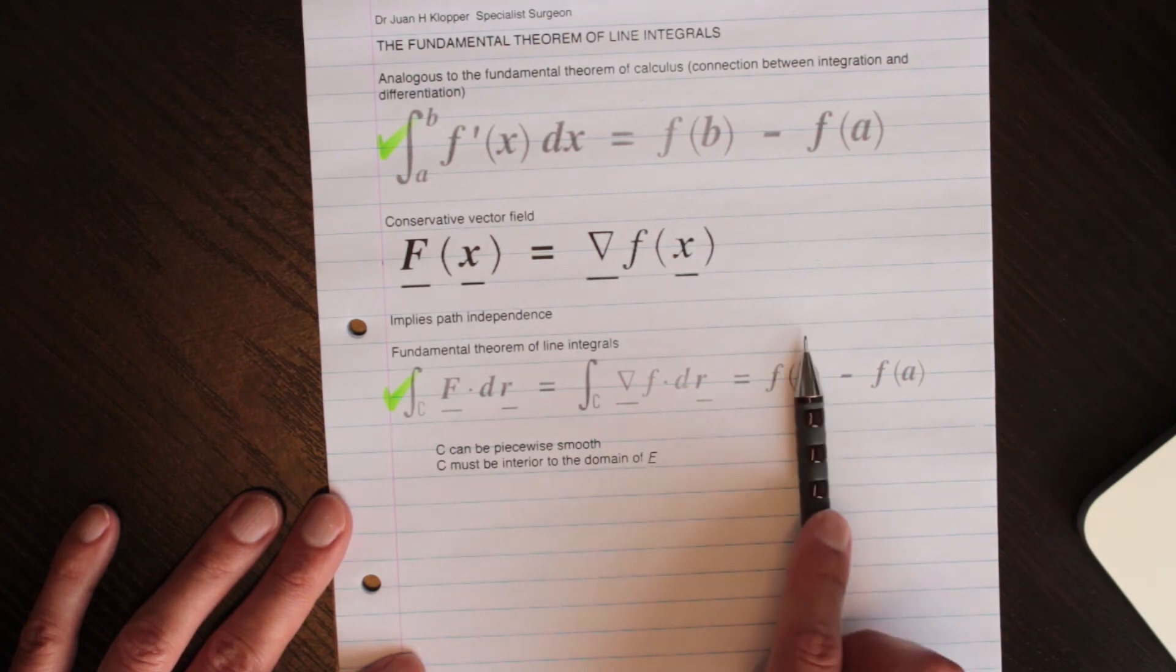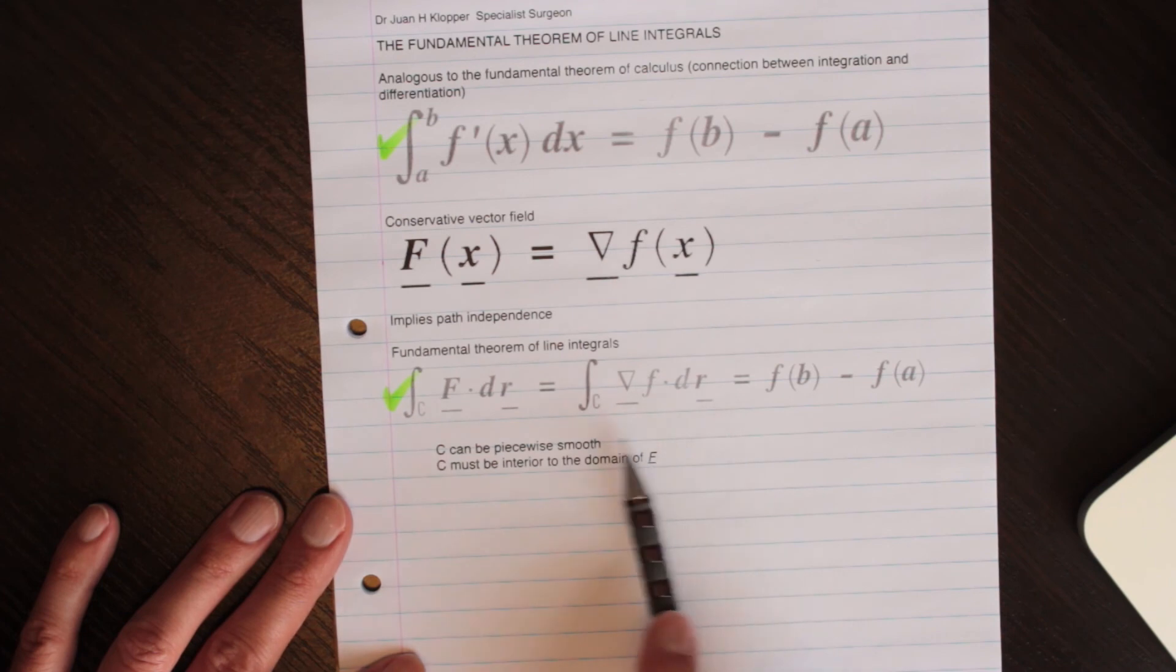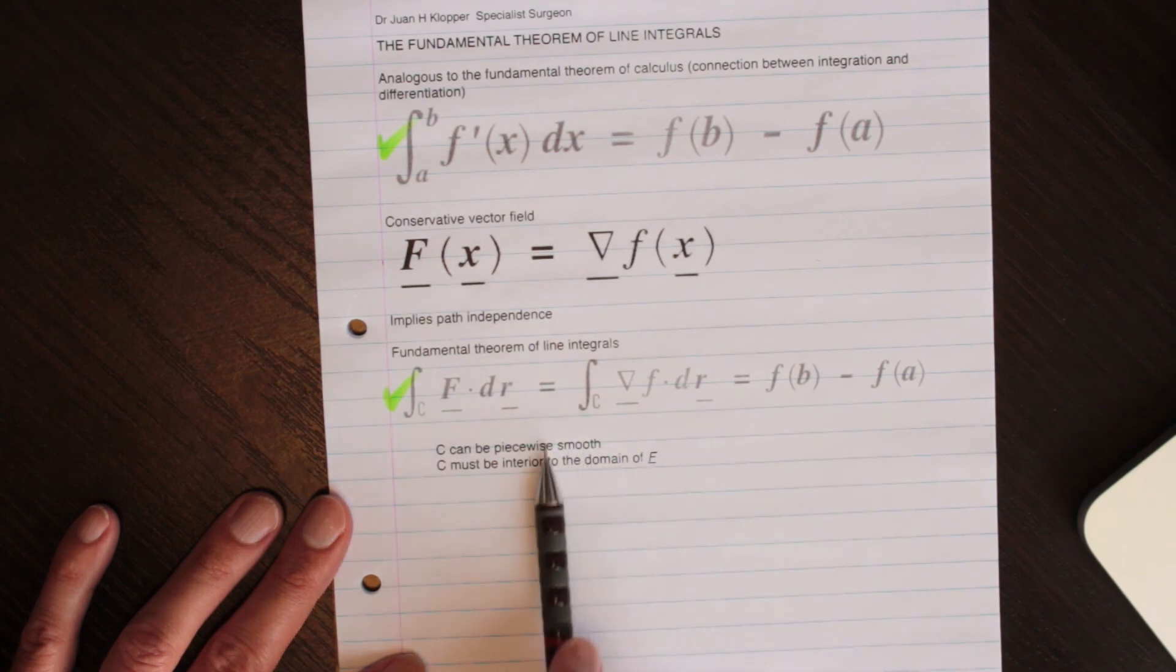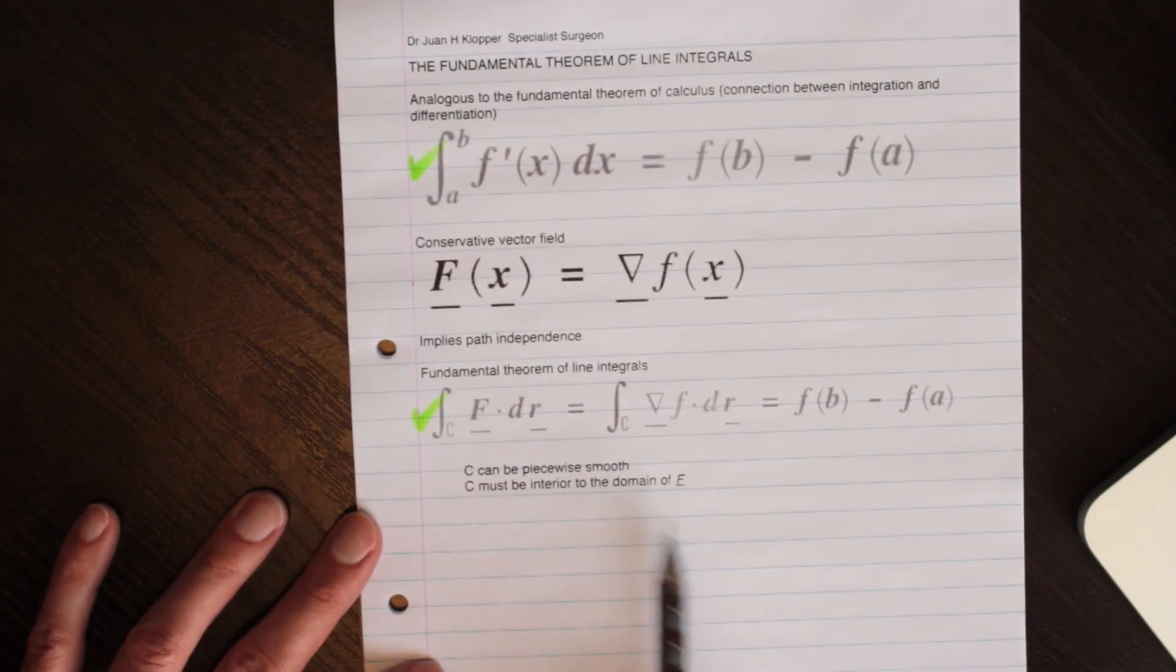Then there might be a jump discontinuity or whatever, the next, so it needn't be, the whole thing needn't be smooth. But in the sections that fit along the path, as long as each of them is smooth, smoothness implies differentiability on each section, so that can be piecewise.